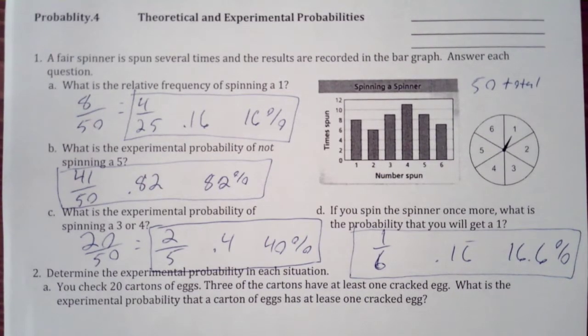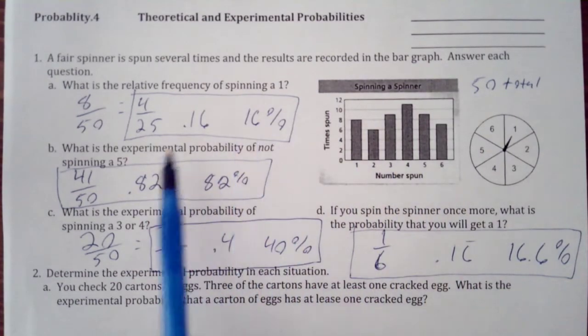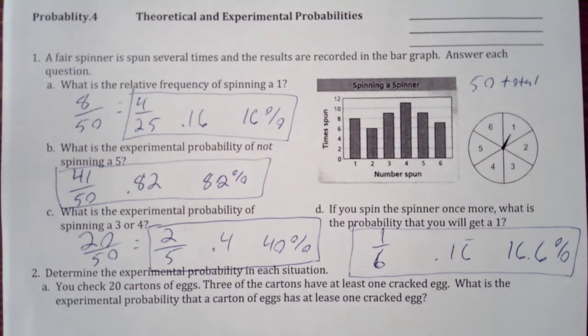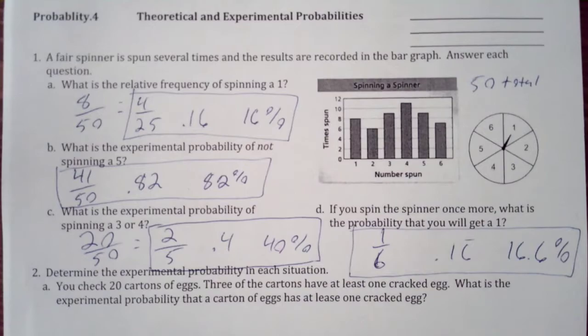And the reason the problem with theoretical probability here is it doesn't account that I flick with probably the same momentum every time, and I started at 1 this time, I started at 5 next time, a 4 the time after that. And it doesn't account for these little experimental errors that happen. And when you roll a die, what side does it start on? That affects our probability, but we can't really determine that with theoretical probability.